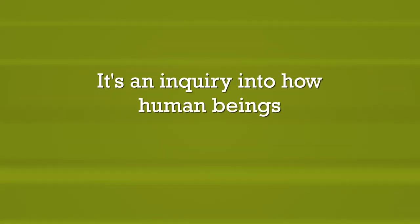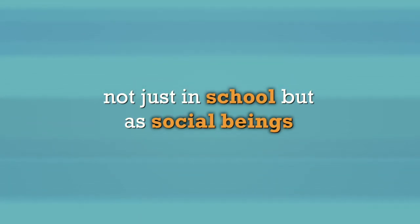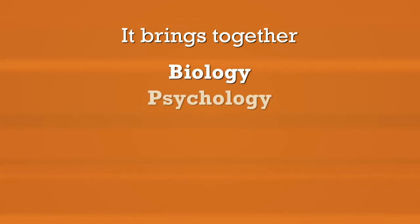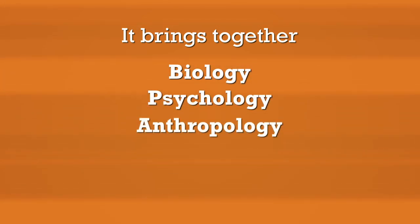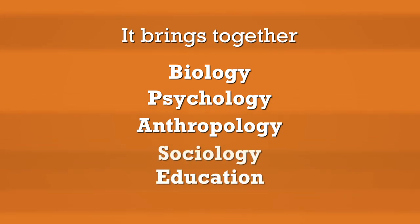On the university level we can think about human development in terms of its evolution as an academic discipline. It's an inquiry into how human beings grow and learn — not just in school but as social beings — and it helps bring together various academic disciplines: biology and psychology, anthropology and sociology, education and biomedicine. It takes the best of these complementary fields into an interdisciplinary approach to help us understand how human beings go through their life cycle.